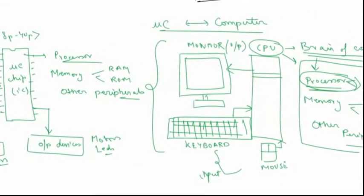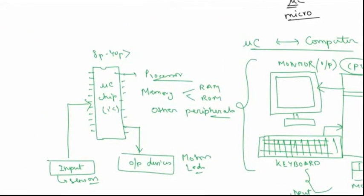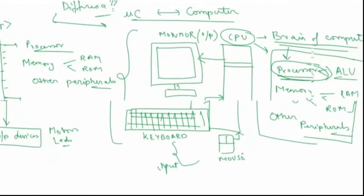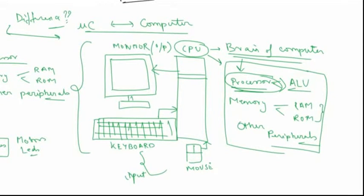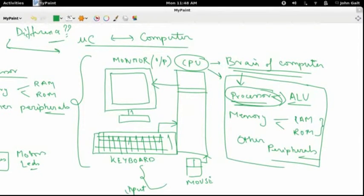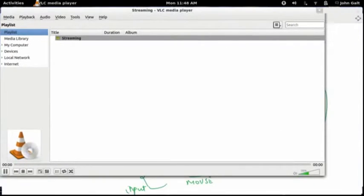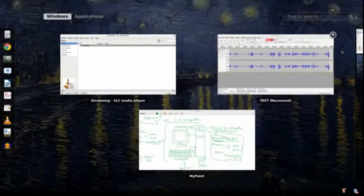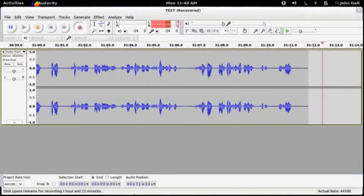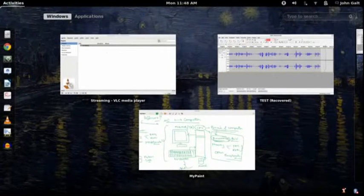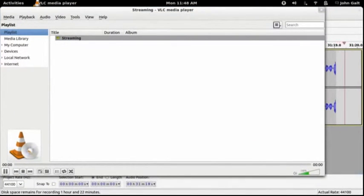As you can see, a microcontroller is very similar to what we saw in the computer before. So what is the difference between them? The difference is that a computer can perform several functions at the same time. For example, right now I am using a computer — I have MyPaint software for sketching this lecture, at the same time I have VLC running which is recording my desktop, and I also have Audacity running which is recording my voice.